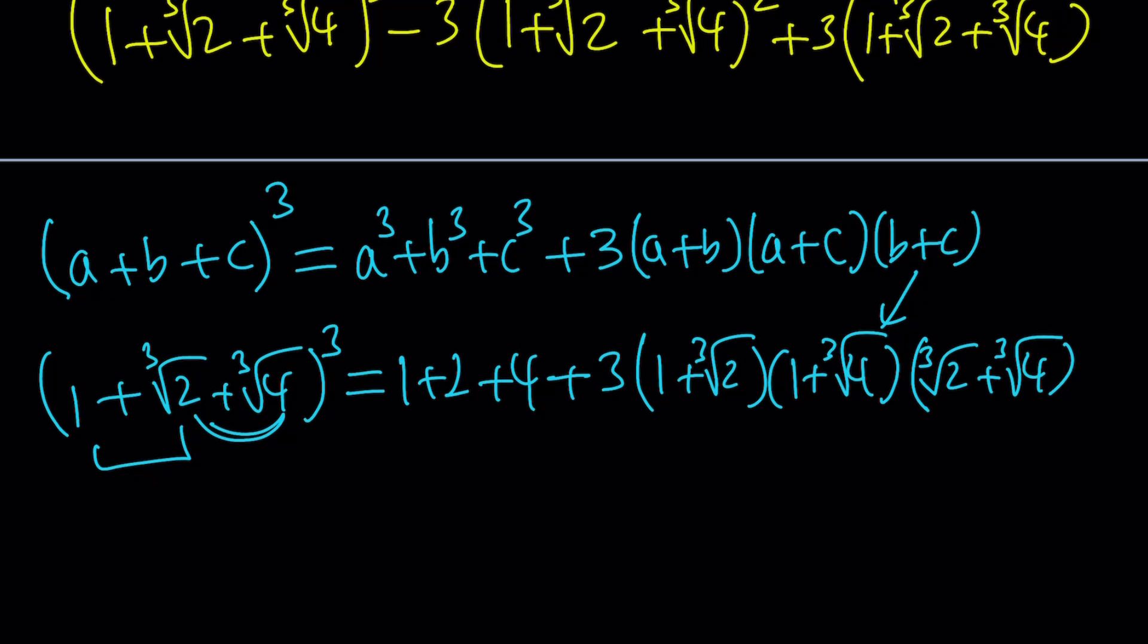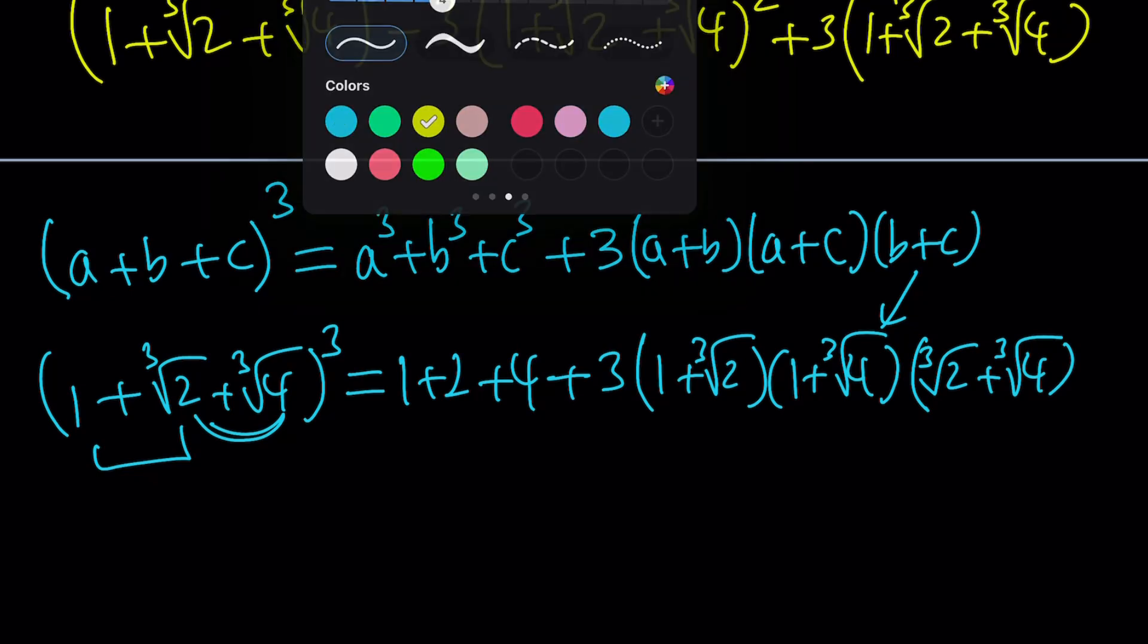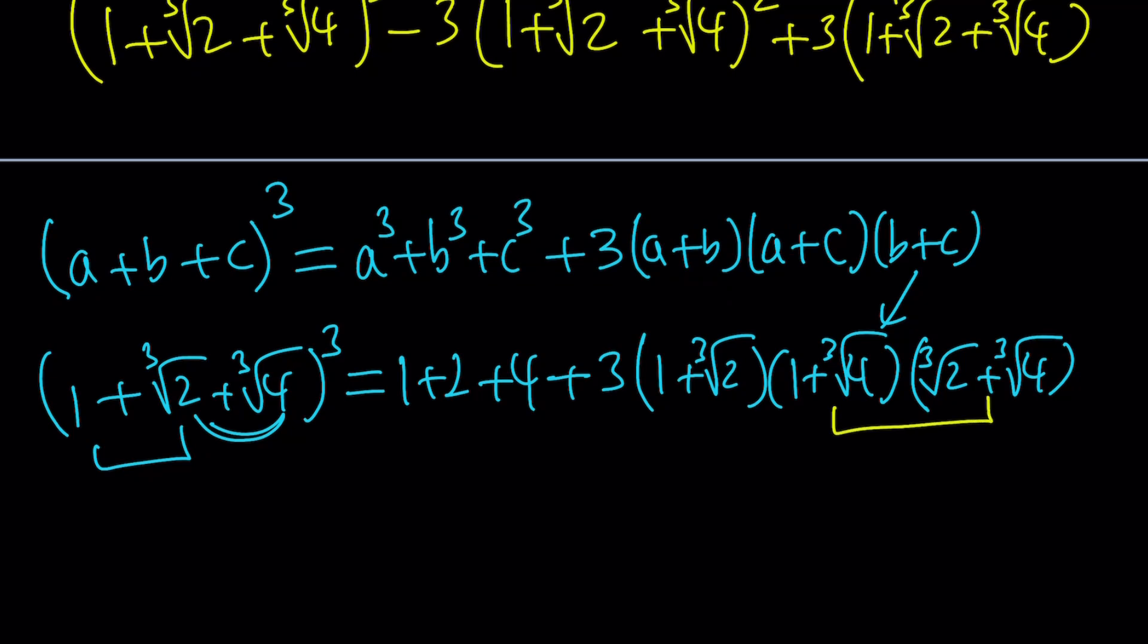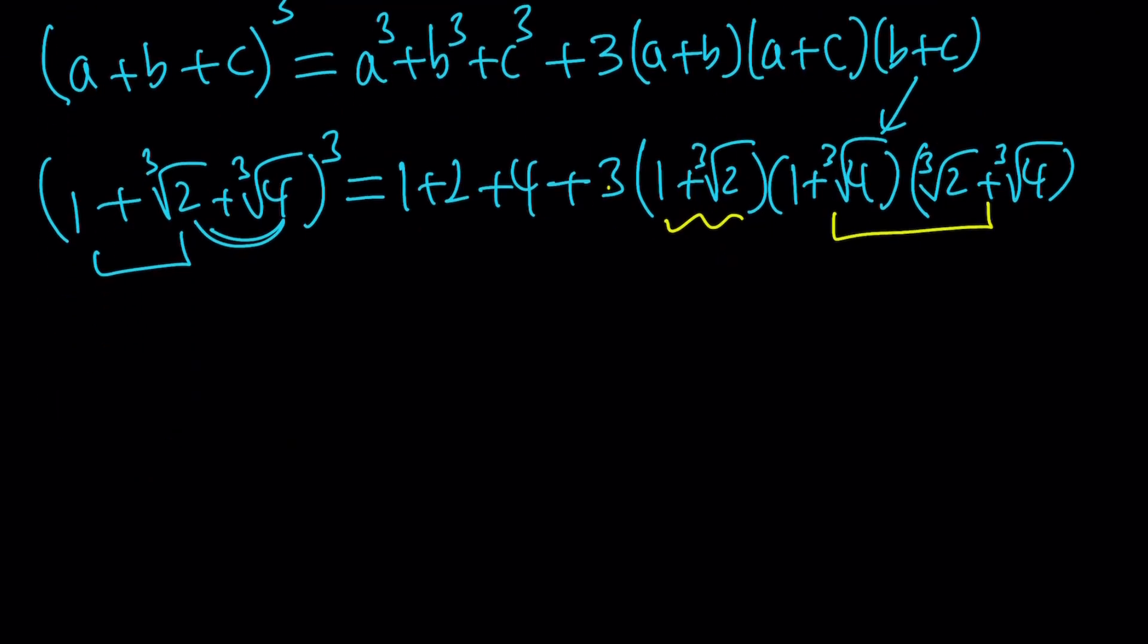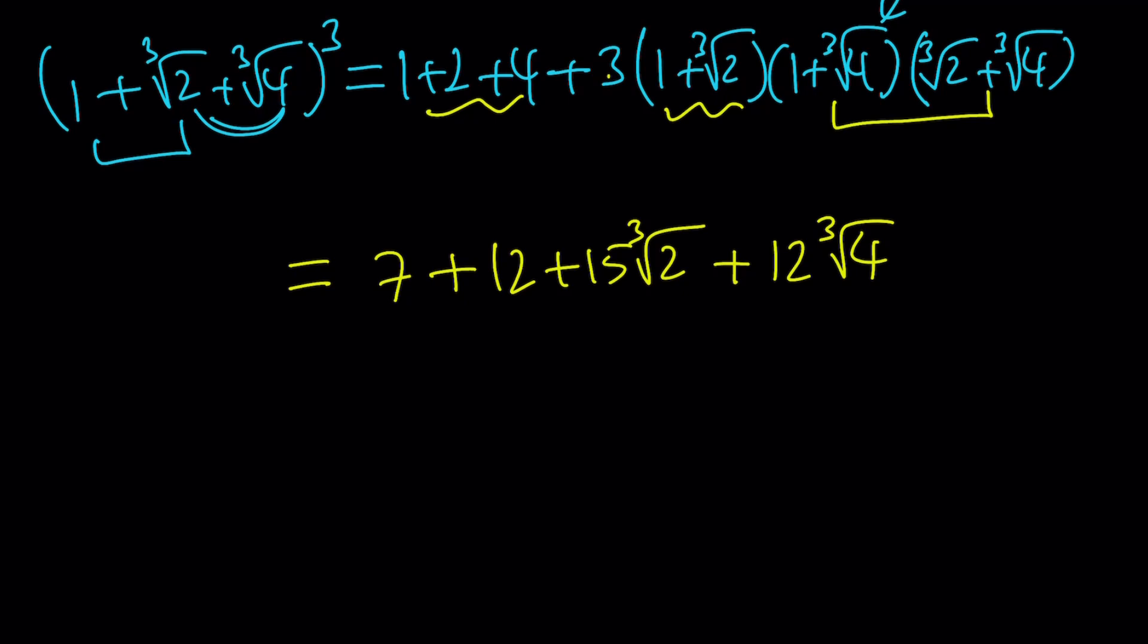So now, we're going to multiply these, right? So usually the way I do it is I'm going to multiply these two things, and then multiply the product by this, and multiply by 3, of course. But to keep a long story short, let's go ahead and give you the answer right away because that's going to be a little painful. So we're going to get a 7 from here, and from here, we're going to be getting 12 plus 15 cube root of 2 plus 12 cube root of 4. That's what we're going to get after we simplify everything. So this is the a plus b plus c cubed.